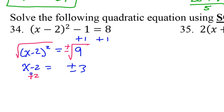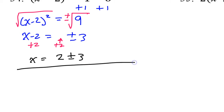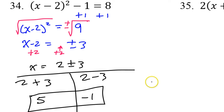Now we have to add 2 to both sides. Be careful to put that 2 in the front. So we have 2 plus or minus 3. If this were a radical 3, it would be my final answer, but these are like terms, so you can add them and then subtract them. We do 2 plus 3 and 2 minus 3 separately, so the answers are 5 and negative 1.